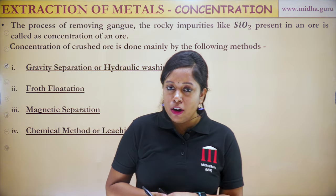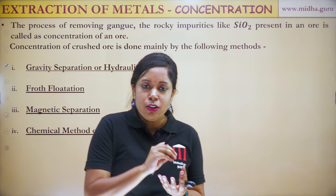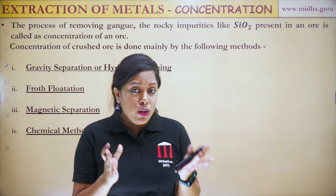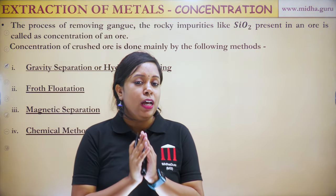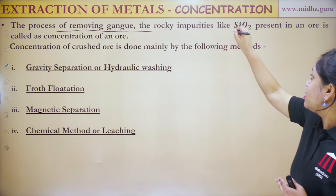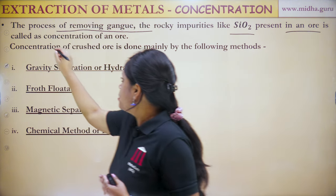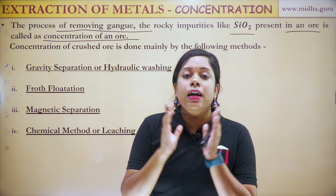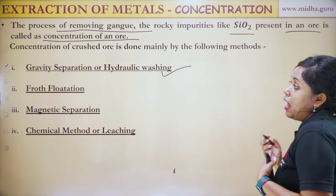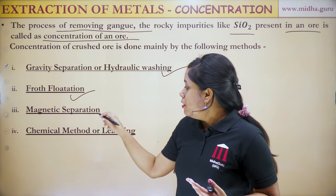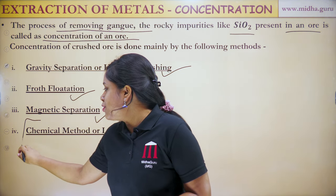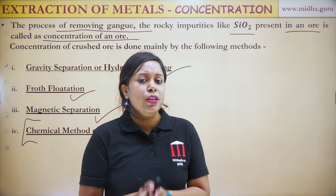Step one is crushing or grinding of ore — we take the ore and convert it into fine powder using a crusher. Step two is concentration of ore — we remove gang or rocky impurities like silicon dioxide from the ore. Concentration can be done by four methods: gravity separation (hydraulic washing), froth flotation, magnetic separation, and chemical method or leaching. This last method is also used in the extraction of aluminium.